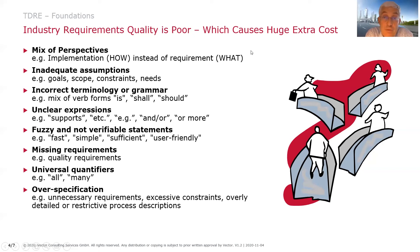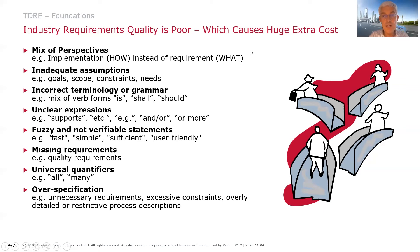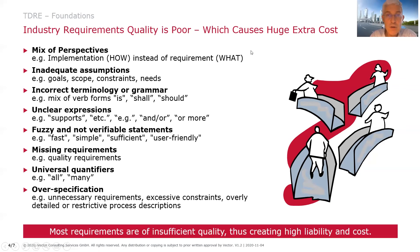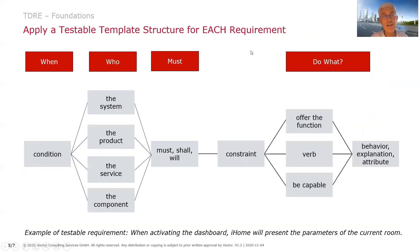And finally, over-specification: we can put too much solution into the requirement. That may look nice, but at the same time it constrains how to implement, because the solution space gets smaller and smaller. So let's be clear that we write good requirements, and that brings us not only to test orientation but also to reduced costs — rework will get much smaller if requirements are clear from the beginning.